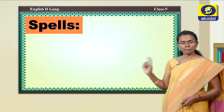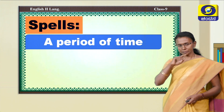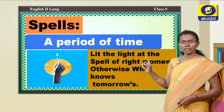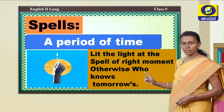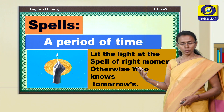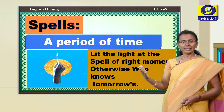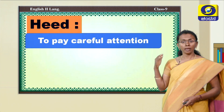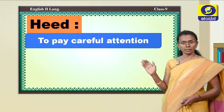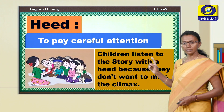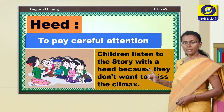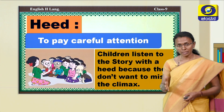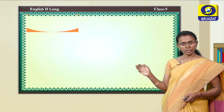Next word is 'spells' — meaning a period of time. For example: 'Lit the light at the spell of the right moment, otherwise who knows what tomorrow holds.' Next one, 'heed' — meaning to pay careful attention. For example: 'Listen to the story with great heed because they don't want to miss the climax.' So they are very much concentrated in listening.